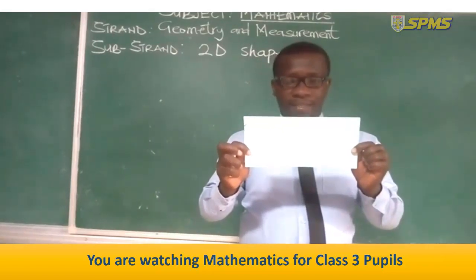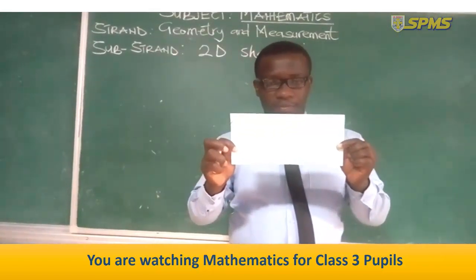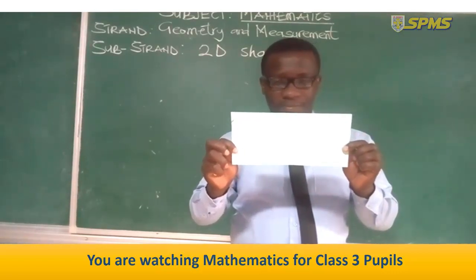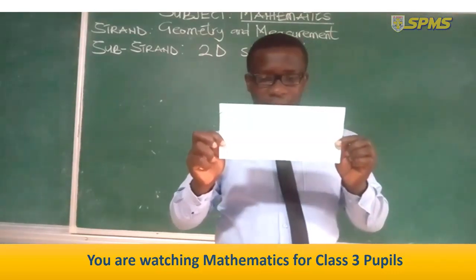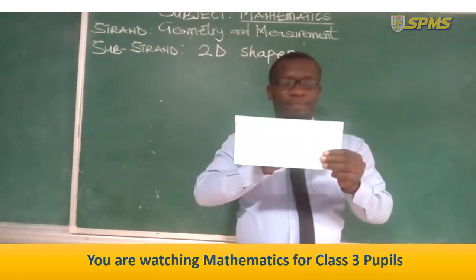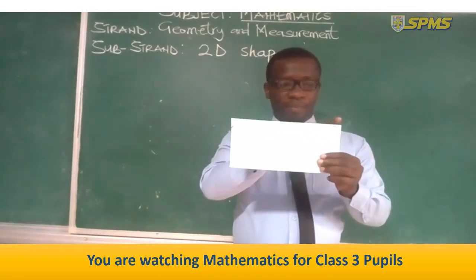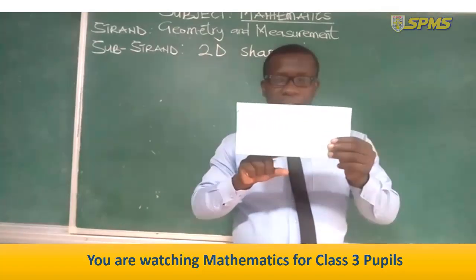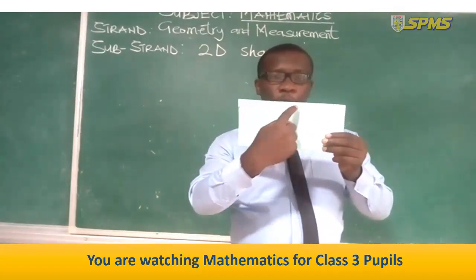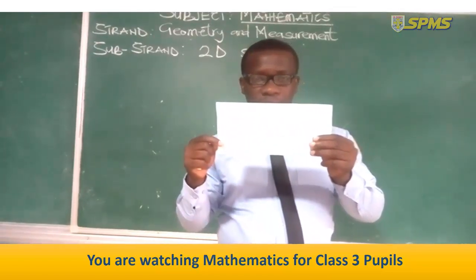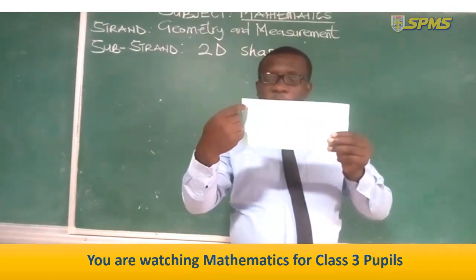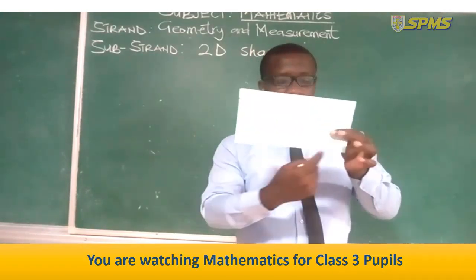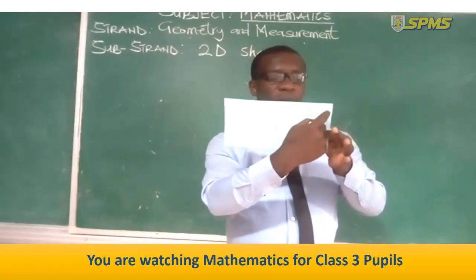What makes this a rectangle? A rectangle has two opposite sides that are equal. It has four corners — one, two, three, four.